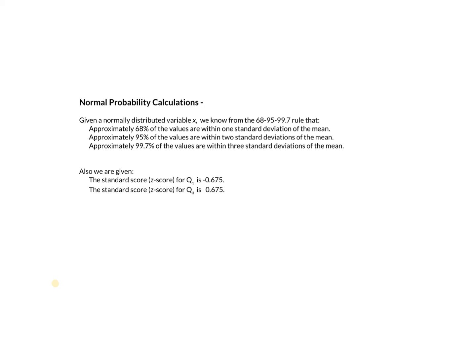Normal probability calculations. We're going to use the 68-95-99.7 rule, which tells us approximately 68% of the values in a normal distribution are within one standard deviation of the mean, approximately 95% are within two standard deviations of the mean, and approximately 99.7% of the values are within three standard deviations of the mean.